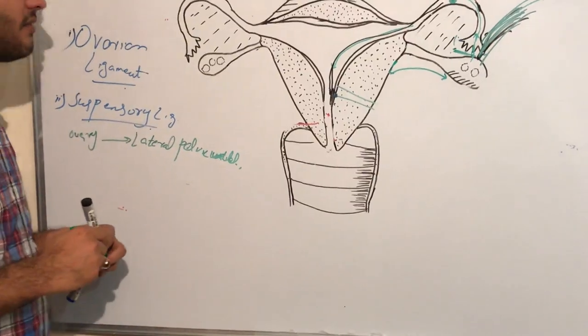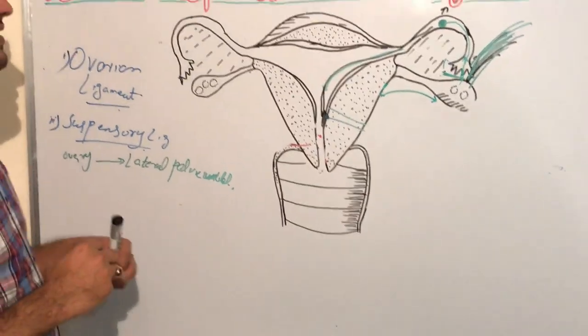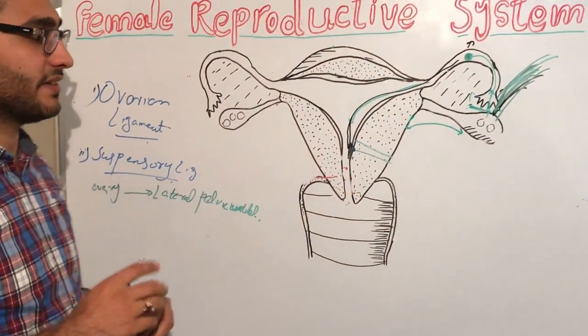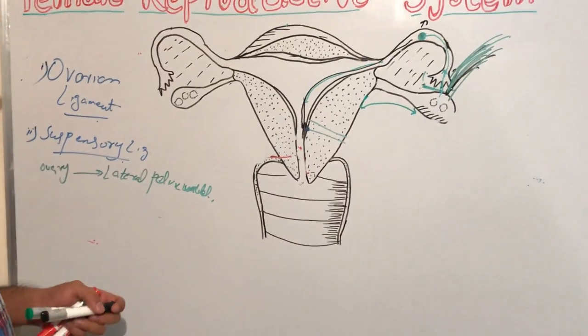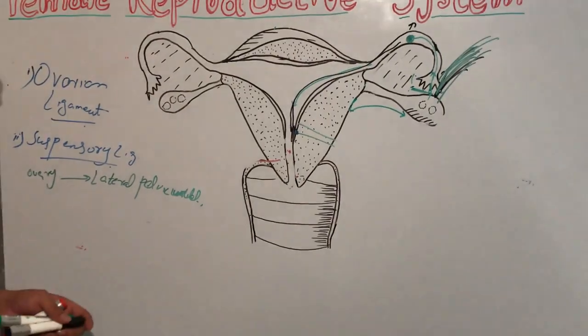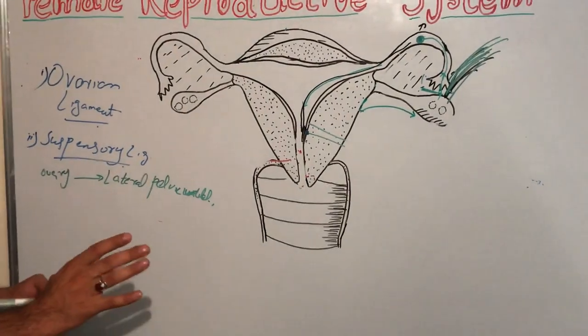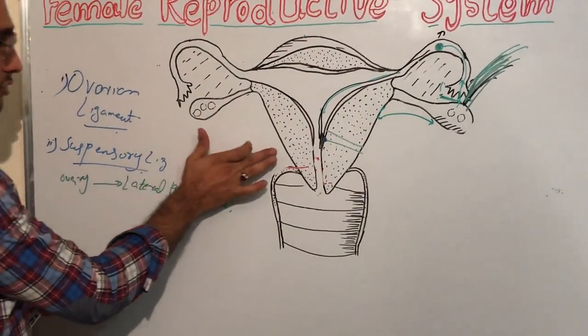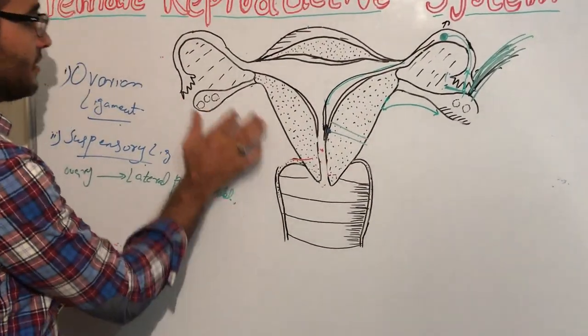The third one is known as the broad ligament. This ligament provides support to the ovary, uterus, and fallopian tube.